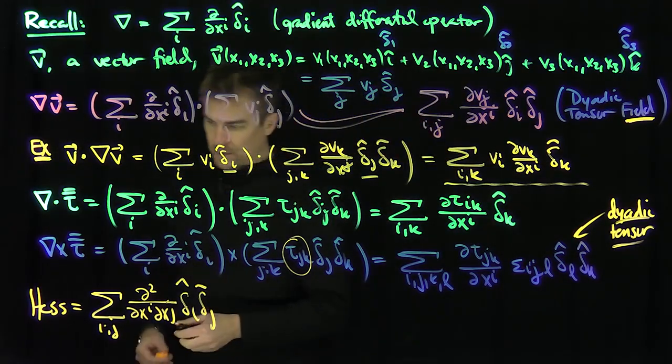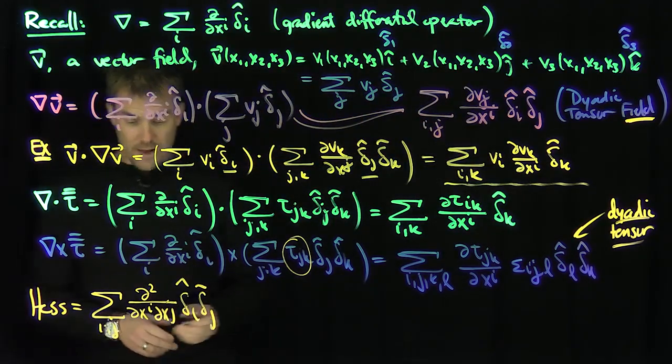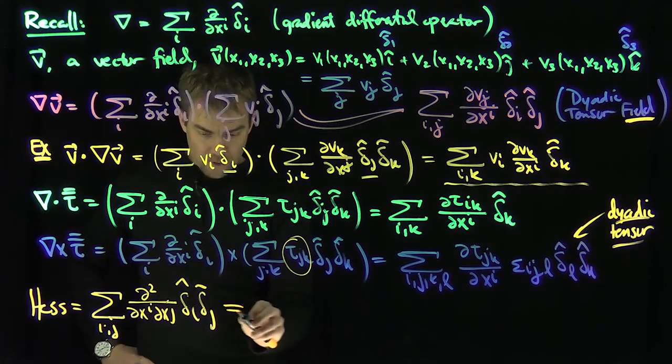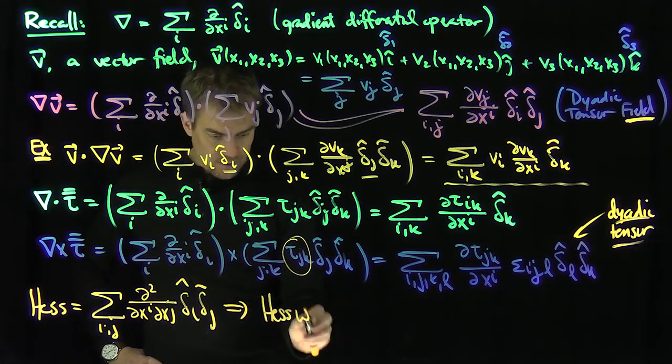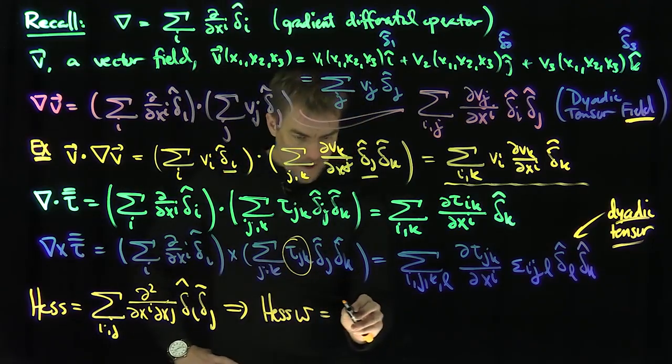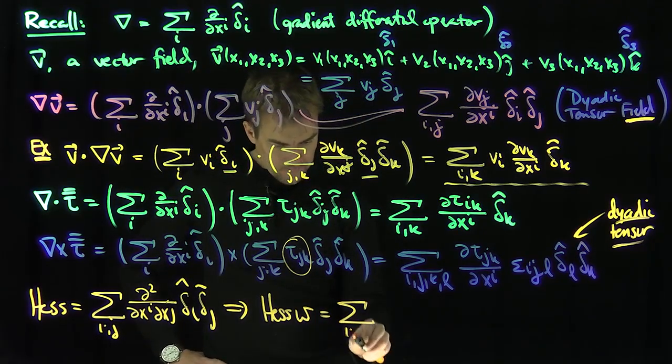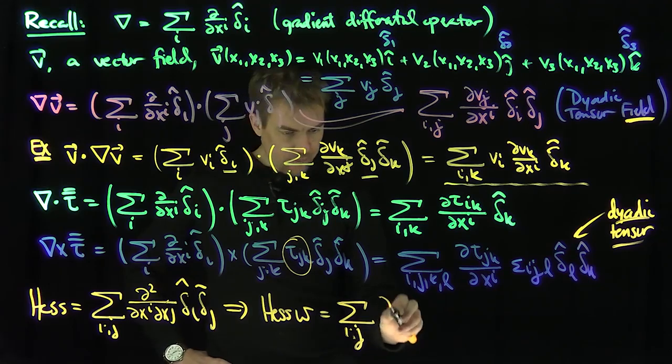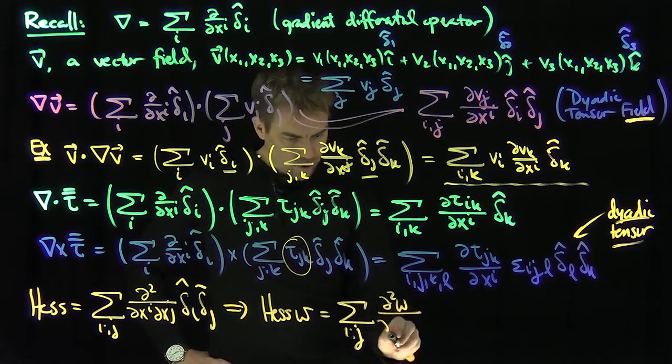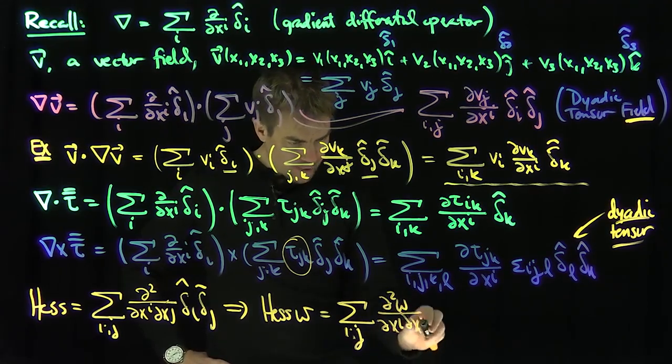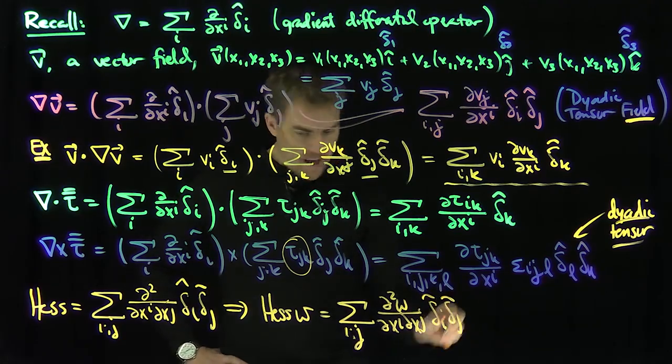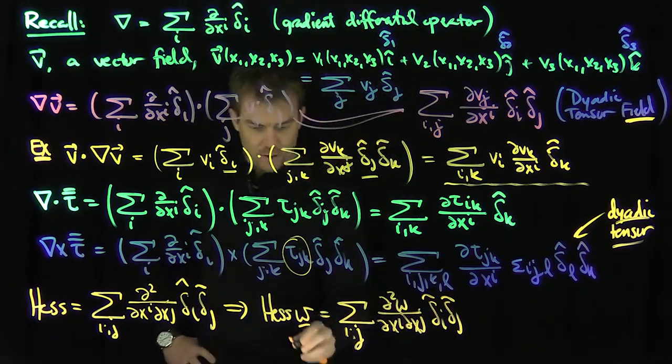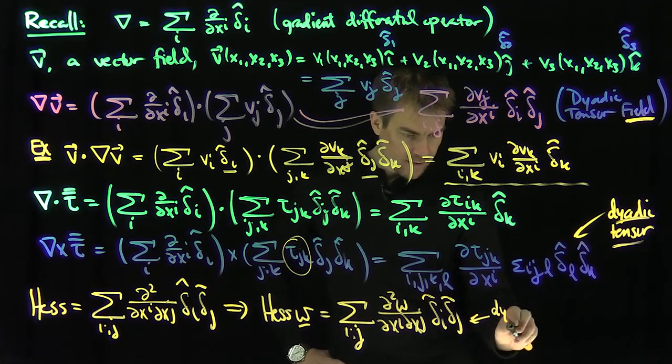But how does this Hessian operator work if you input a scalar field? The Hessian of w would be the sum over i and j of partial squared w partial xi partial xj delta i hat delta j hat. If you do the Hessian of a scalar field, this becomes a dyadic tensor.